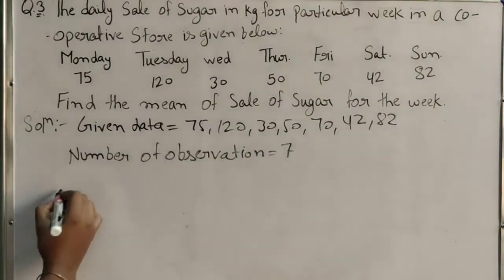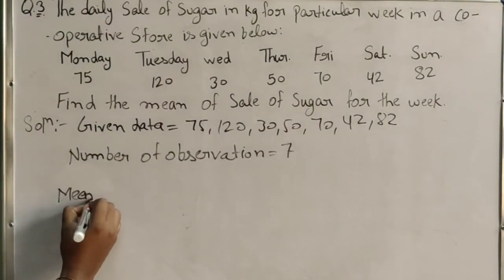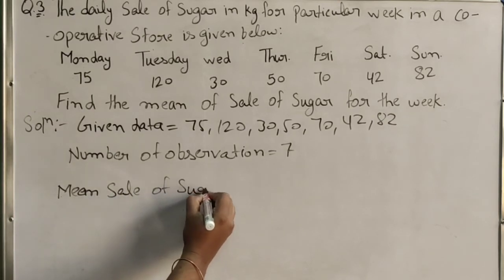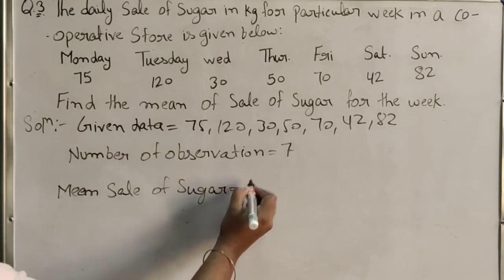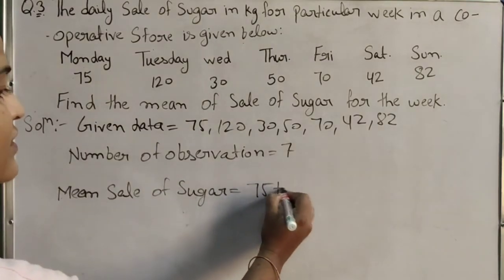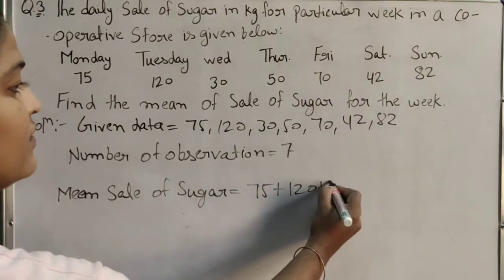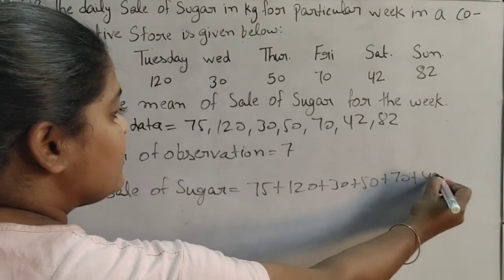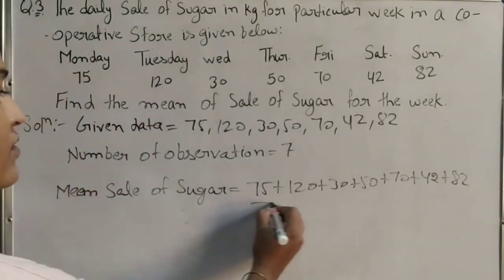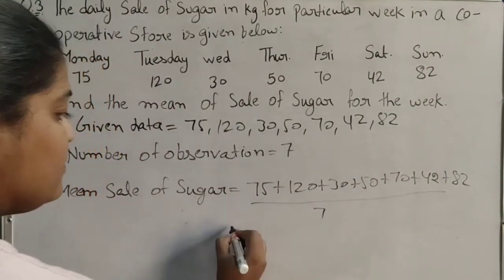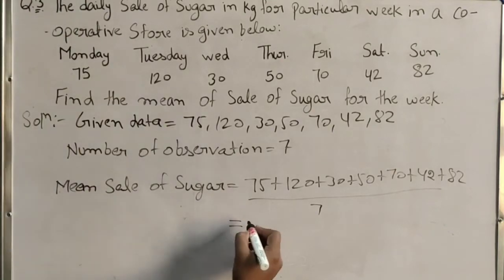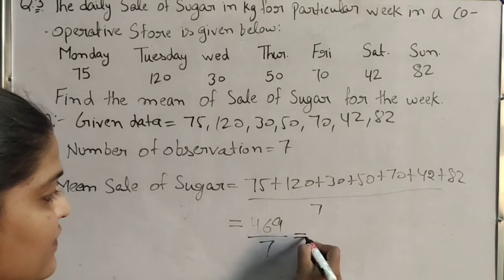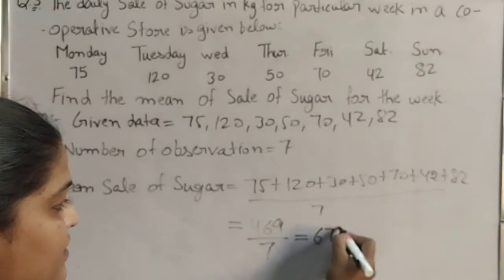So, mean निकालना है हमें sale of sugar. Mean = सबका sum, upon 7. 75 plus 120 plus 30 plus 50 plus 70 plus 42 plus 82, upon 7. सबको जोड़ेंगे, हमारा 469 upon 7. Divide करेंगे, तो हमारा answer है 67 kg.